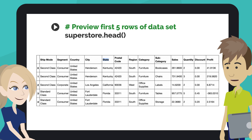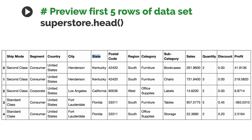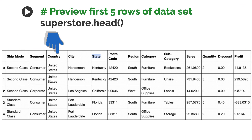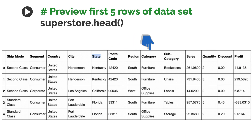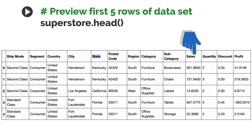What kind of data is in this table? Mode of shipping used for shipment delivery — categorical. Customer segment, product shipped to, country, city, and state in which the shipment was delivered, postal code, country region, the category the product belongs to, subcategory of the product, and sales made in USD.